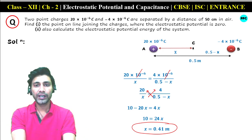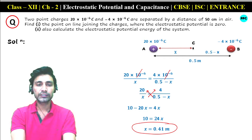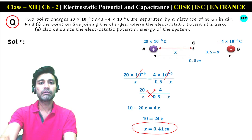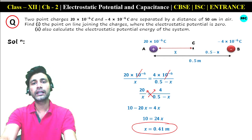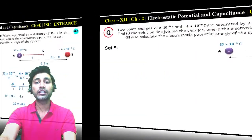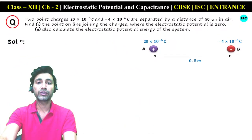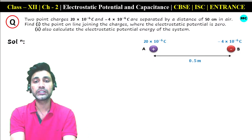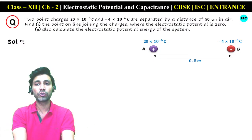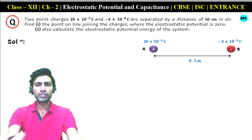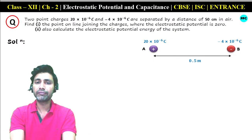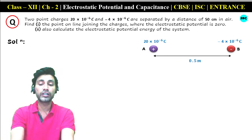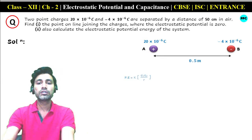This is how we find the position of point C where the net electrostatic potential is zero due to both charges at A and B. I hope you understood the first part. In the second part, we need to find the electrostatic potential energy of this system — i.e., with charges at points A and B separated by 0.5 meter.